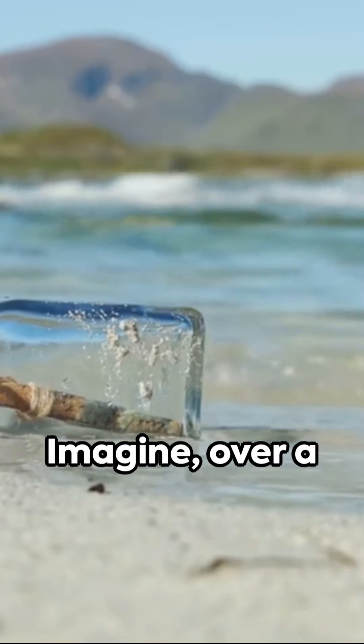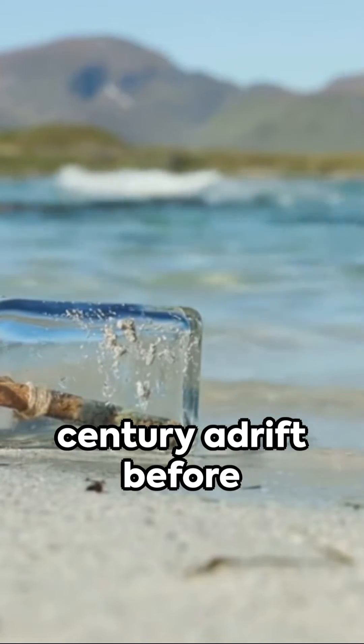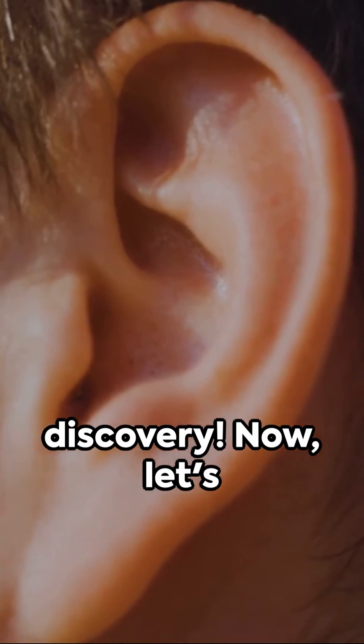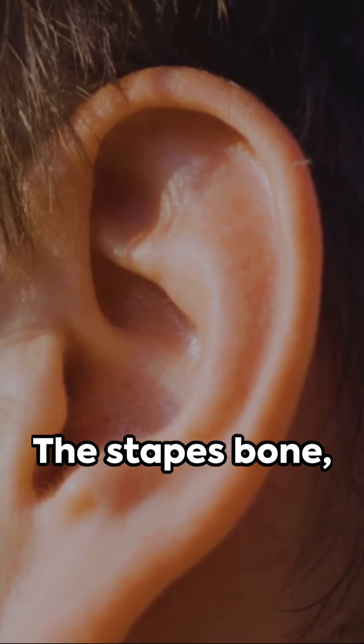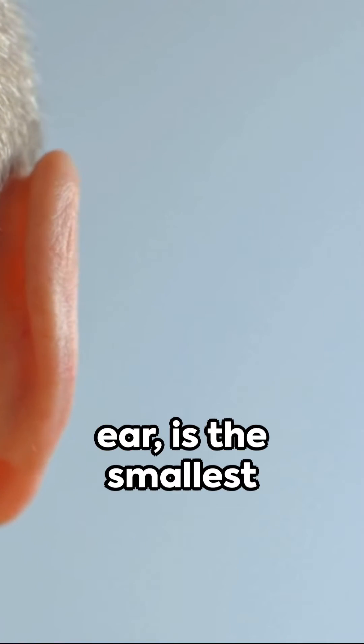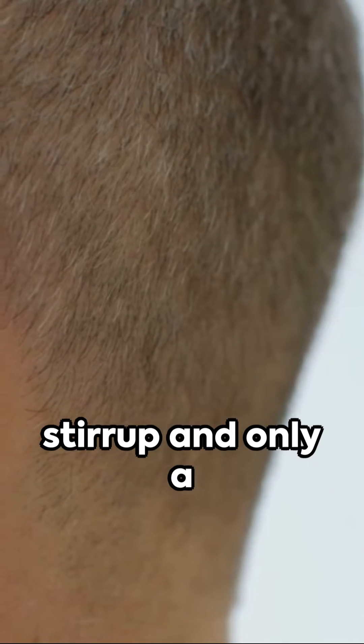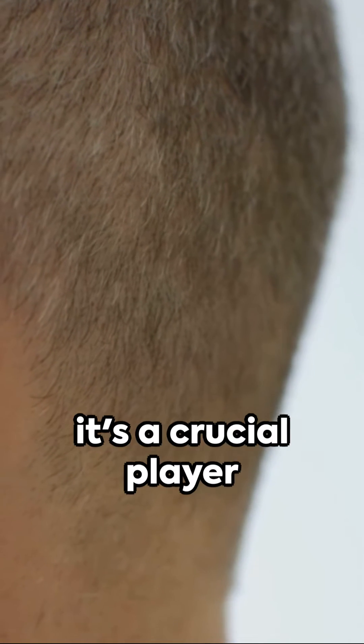Imagine over a century adrift before discovery. Now let's get microscopic: the stapes bone, nestled in the human ear, is the smallest bone in your body—shaped like a stirrup and only a few millimeters long.